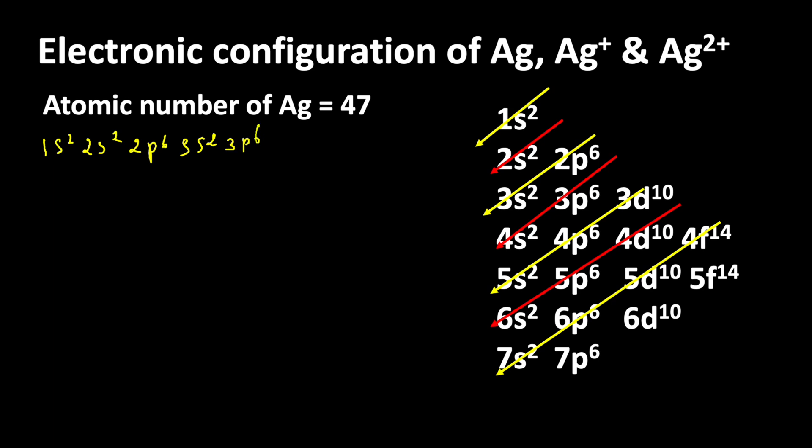After 3p6, electrons enter into 4s orbital: 4s2, 3d10, 4p6, 5s2, 4d9.